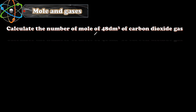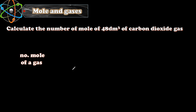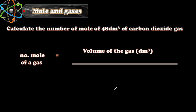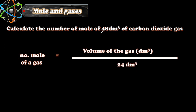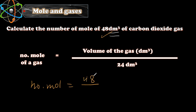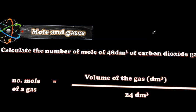Let's have an example. It says: calculate the number of moles of 48 dm³ of carbon dioxide gas. The rule says: number of moles of gas equals volume of the gas in dm³ over 24 dm³. So number of moles equals 48 dm³ over 24 dm³, which equals 2 moles.